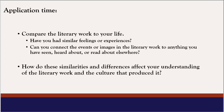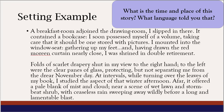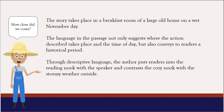Then we went through language describing setting. Setting is a literary term for time, place, physical details, and circumstances in which the action of the narrative occurs. Language can describe the setting, and that gives us insight into the author's culture. Here's another setting example — pause to read it and answer the question: what is the time and place of the story? What language told you that? Underline or highlight which words told you that. Then here is the answer for the setting example — pause to read it.